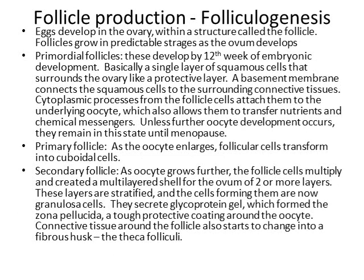In parallel with egg development, a follicle develops as a structure surrounding the egg. We start with the primordial follicle, which develops in the embryo by the 12th week of embryonic development — basically just a layer of squamous cells surrounding the oogonium like a protective layer, with a basement membrane connecting it to surrounding connective tissue and cytoplasmic processes connecting it to the underlying oocyte. Unless stimulated to develop further, these primordial follicles will remain in this squamous cell stage until they die through atresia.